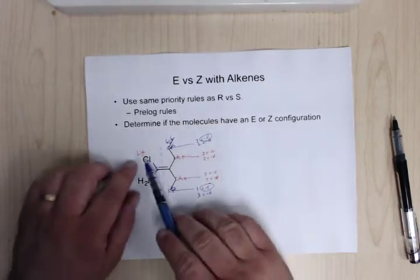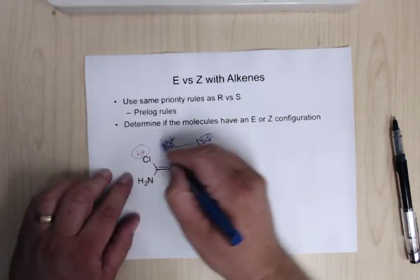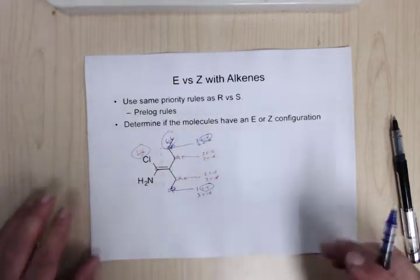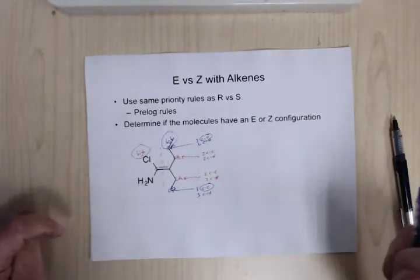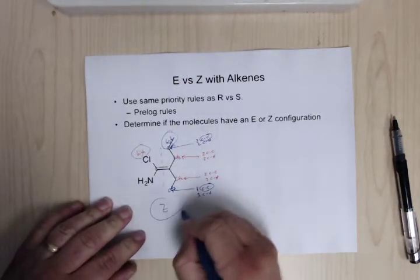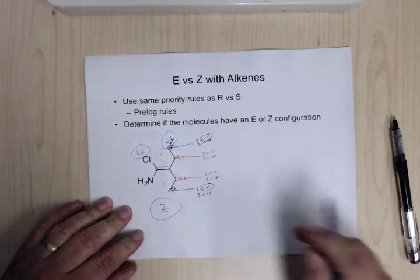Since the high-priority groups are on the same side, it is a Z configuration.